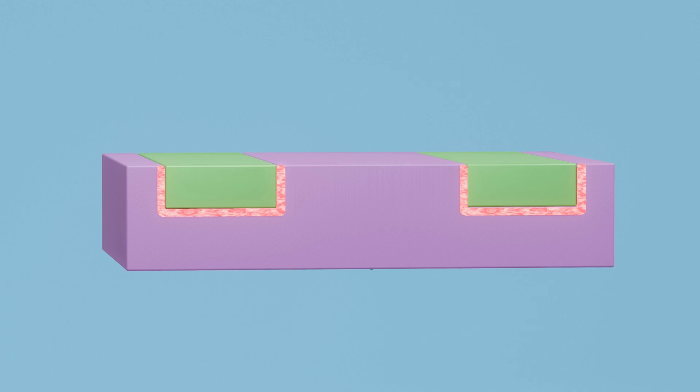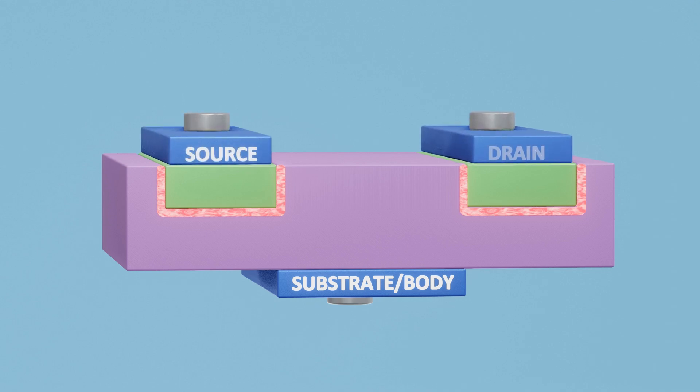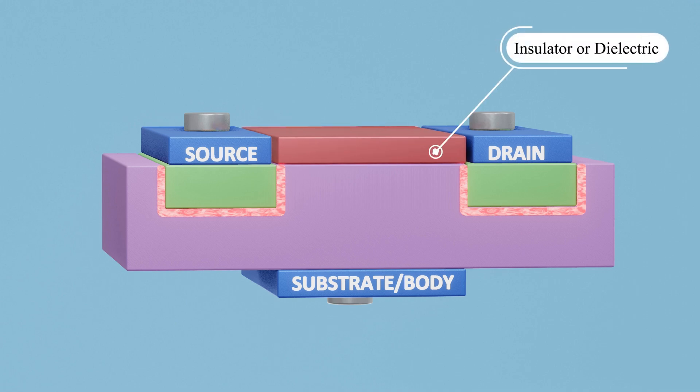The terminal connected to the substrate or body is known as the substrate or body terminal. The other two terminals are referred to as the source and drain terminals. Between the source and drain terminals, there is a thin layer of insulator or dielectric, and above this insulator is the gate terminal.